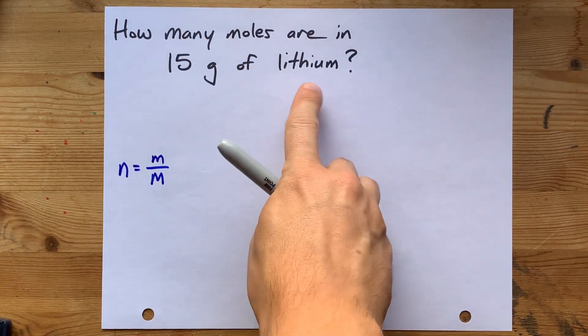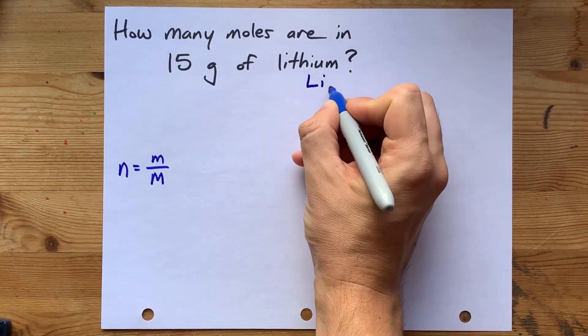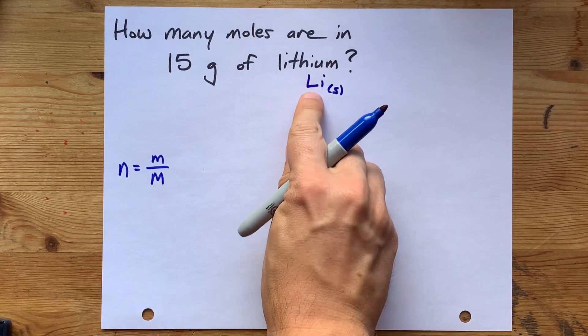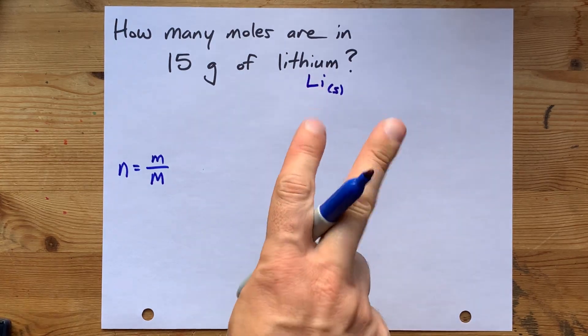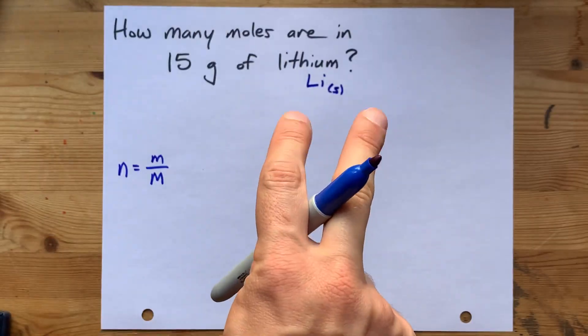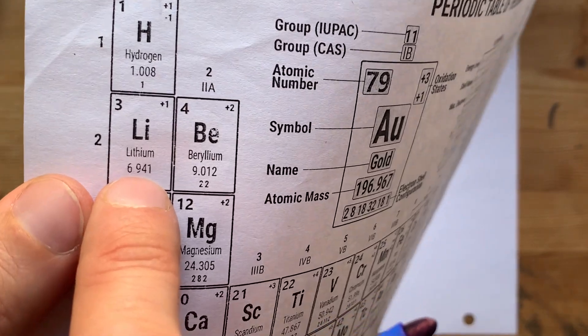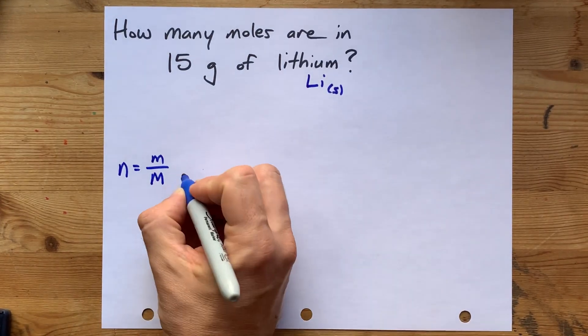But the question is, what is the molar mass of lithium? Well, lithium itself is a metal, which means that we treat each individual atom as its own molecule. And the molar mass is the atomic mass from the periodic table. So that's 6.941. No calculation needed.